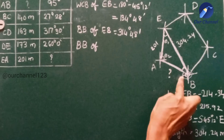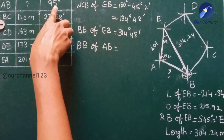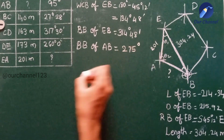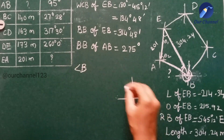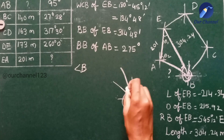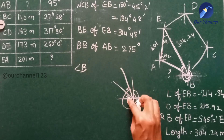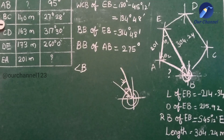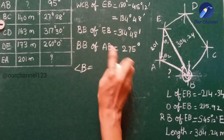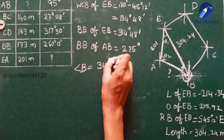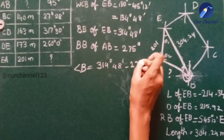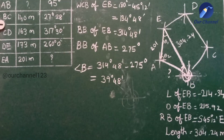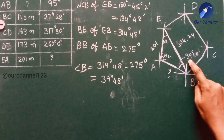Back bearing of AB: the forward bearing is 95°, so back bearing = 95° + 180° = 275°. Angle B = back bearing of EB − back bearing of AB = 314° 48' − 275° = 39° 48'.